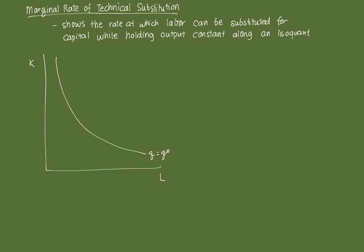So by definition, the marginal rate of technical substitution shows the rate at which labor can be substituted for capital while holding output constant along an isoquant. And mathematically, it's the negative of the slope of an isoquant, and it shows the rate at which L can be substituted for K.